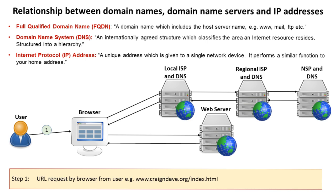Let's look at the relationship between domain names, domain name servers, and IP addresses. We already know what the fully qualified domain name is — that's a domain name which includes the host, like www.craiganddave.org. The domain name system is the system which is run and maintained where web addresses are assigned from the organisation we spoke about earlier. It's an internationally agreed structure which classifies the area and internet resources where it resides, structured into a hierarchy. An IP address can be thought of as a unique address given to a single network device, performing a similar function to your home address. Every single device connected to the internet has to have an IP address — these IP addresses can change, which we'll talk about more in another video.